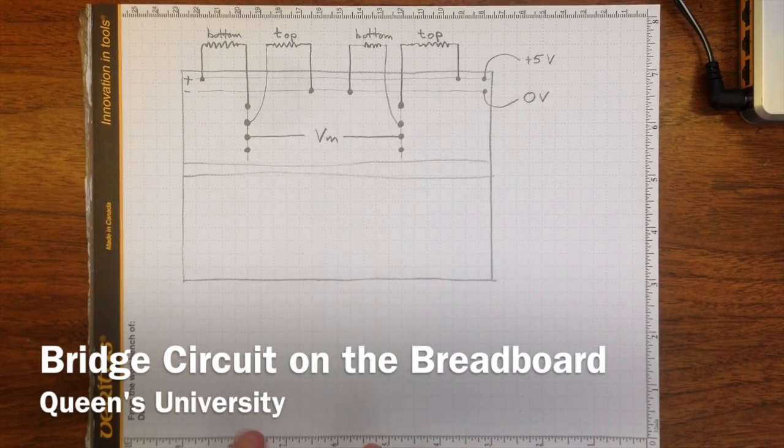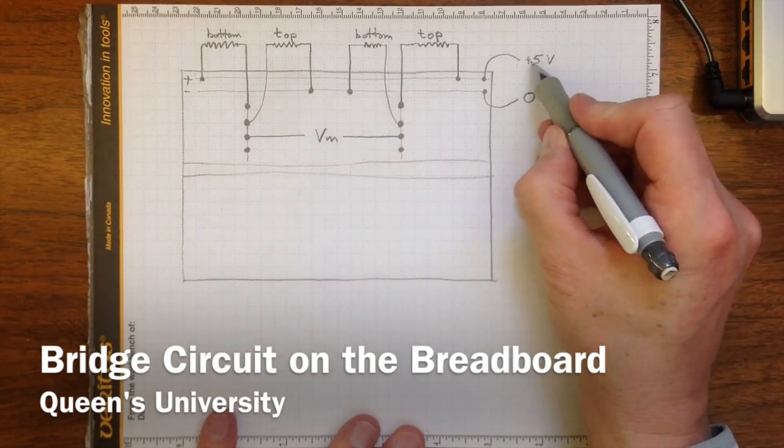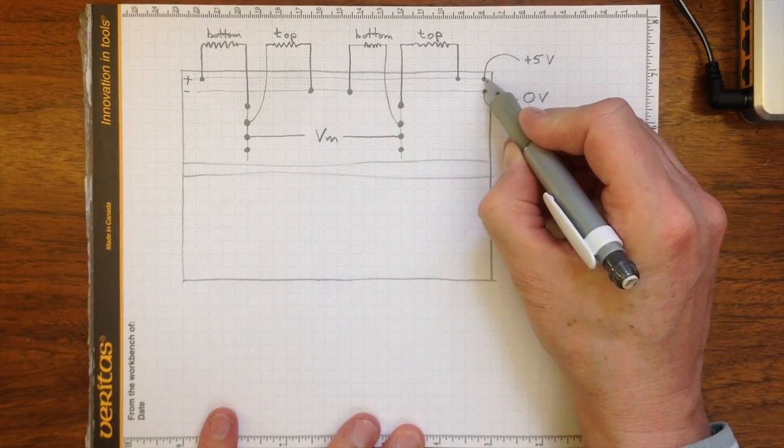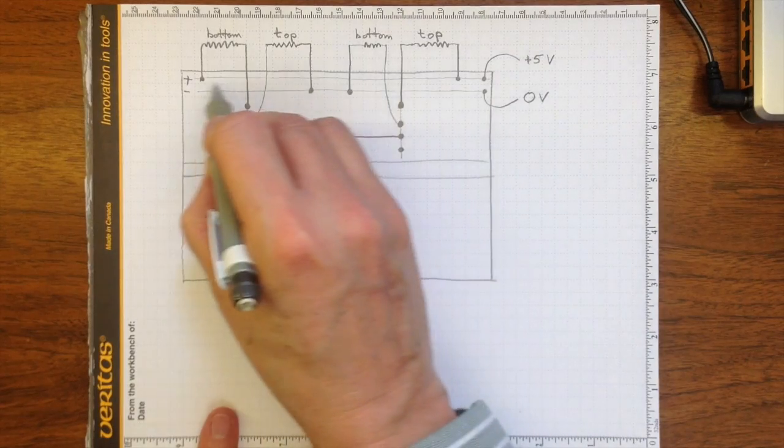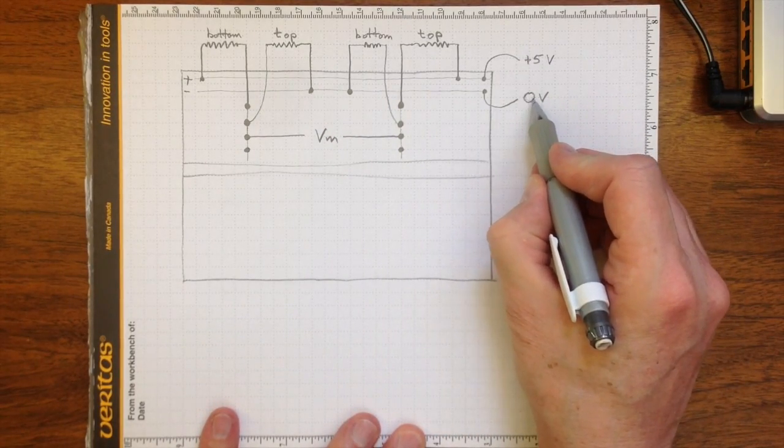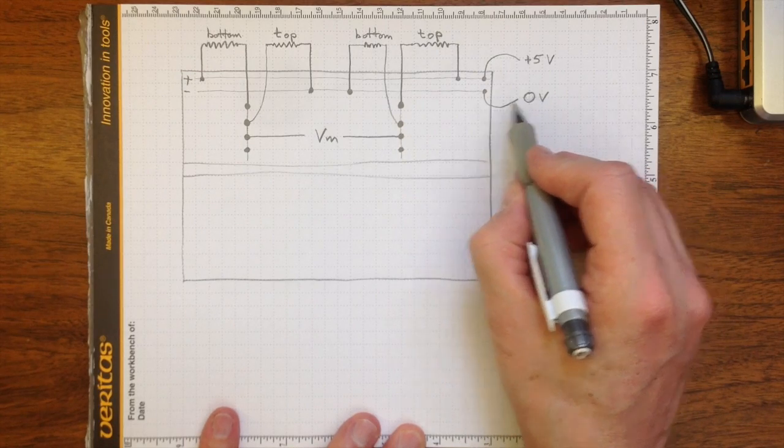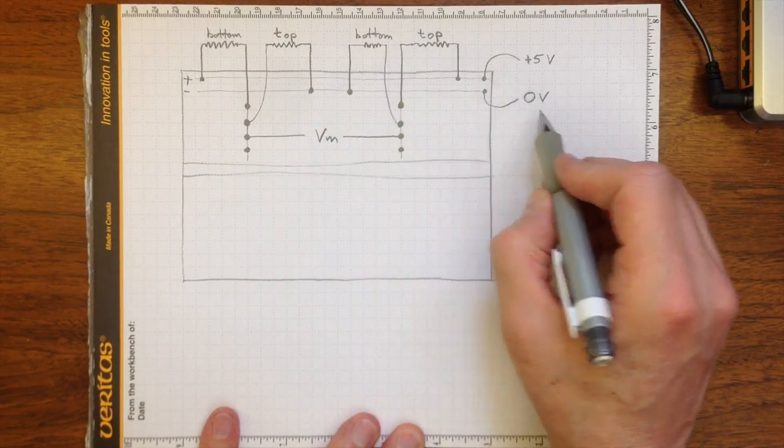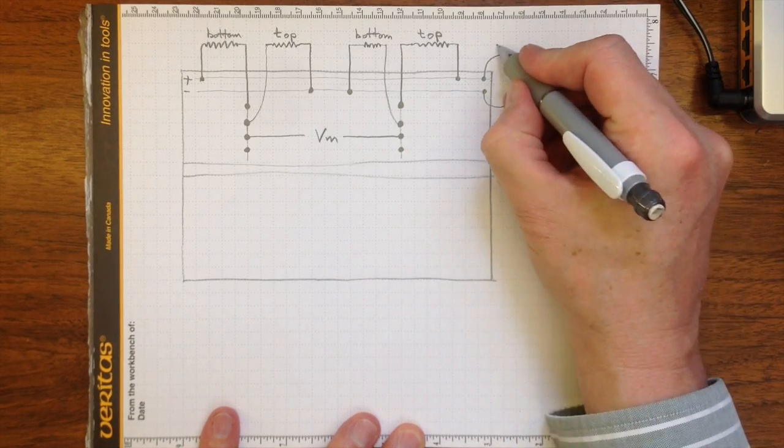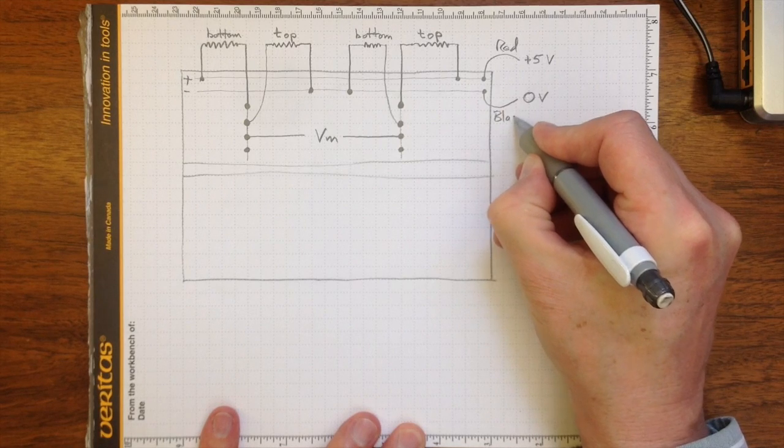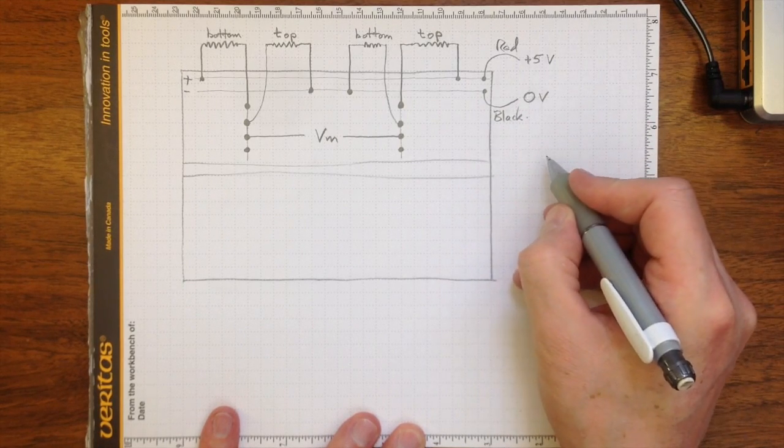If I wanted to set that up on my breadboard, first thing I would do is take the plus five line from my Arduino and connect it to the positive side bus that runs all the way along the rail of the breadboard. Likewise, I'd take the zero volt line from the Arduino, the ground line, and connect it to the ground line all along the edge of the breadboard. I'd use a red wire for that and a black wire for that because it makes it easier to keep track of.